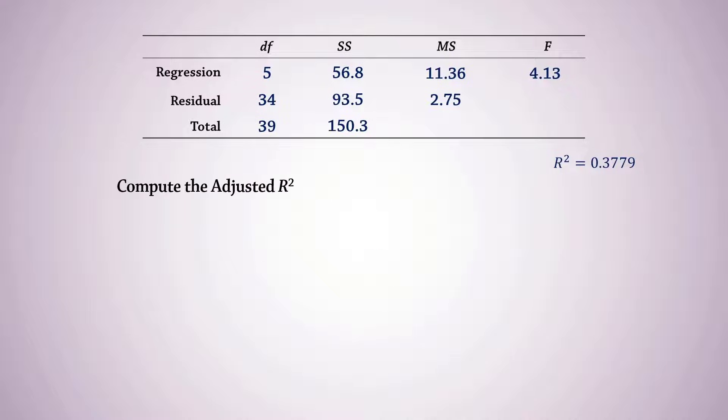Next, we can compute the adjusted R-squared by using this formula. n minus 1 is 39, n minus k minus 1 is 34, and R-squared is 0.3779. Substituting those in the formula gives an adjusted R-squared of 0.2864.